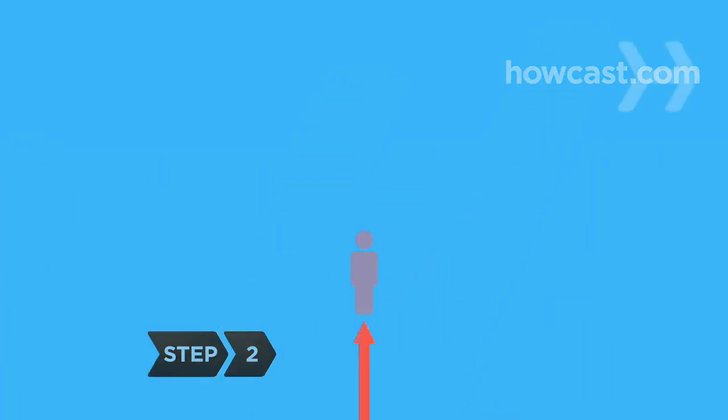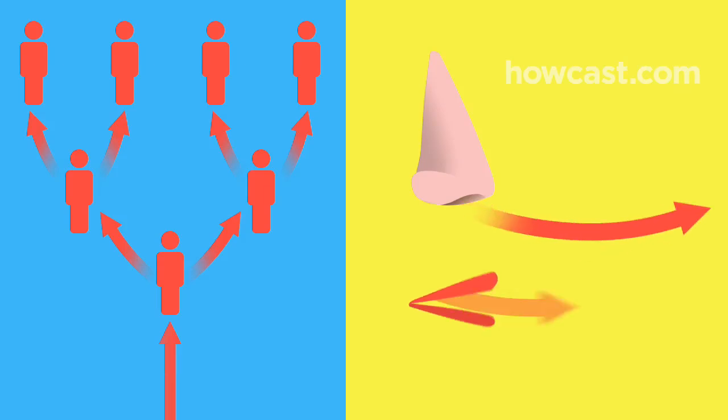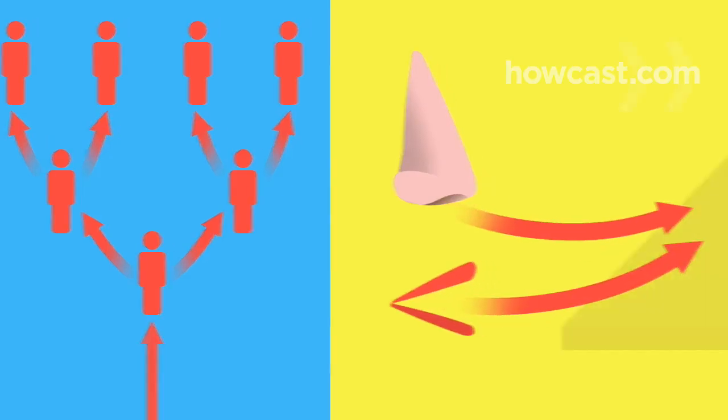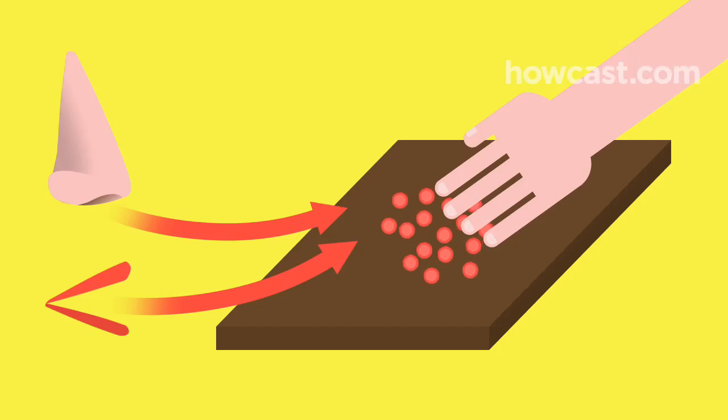Step 2: Swine flu is spread between humans like a cold. A person can catch it by being sneezed, coughed, or breathed on by a carrier, or by touching a surface that has the virus on it and then touching their nose, eyes, or mouth.